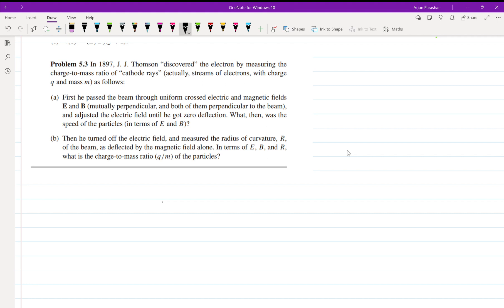He passed the beam of electrons in uniform crossed electric and magnetic fields E and B, mutually perpendicular and both of them perpendicular to the beam also. He adjusted the electric field until he got zero deflection. Then what was the speed of the particles?